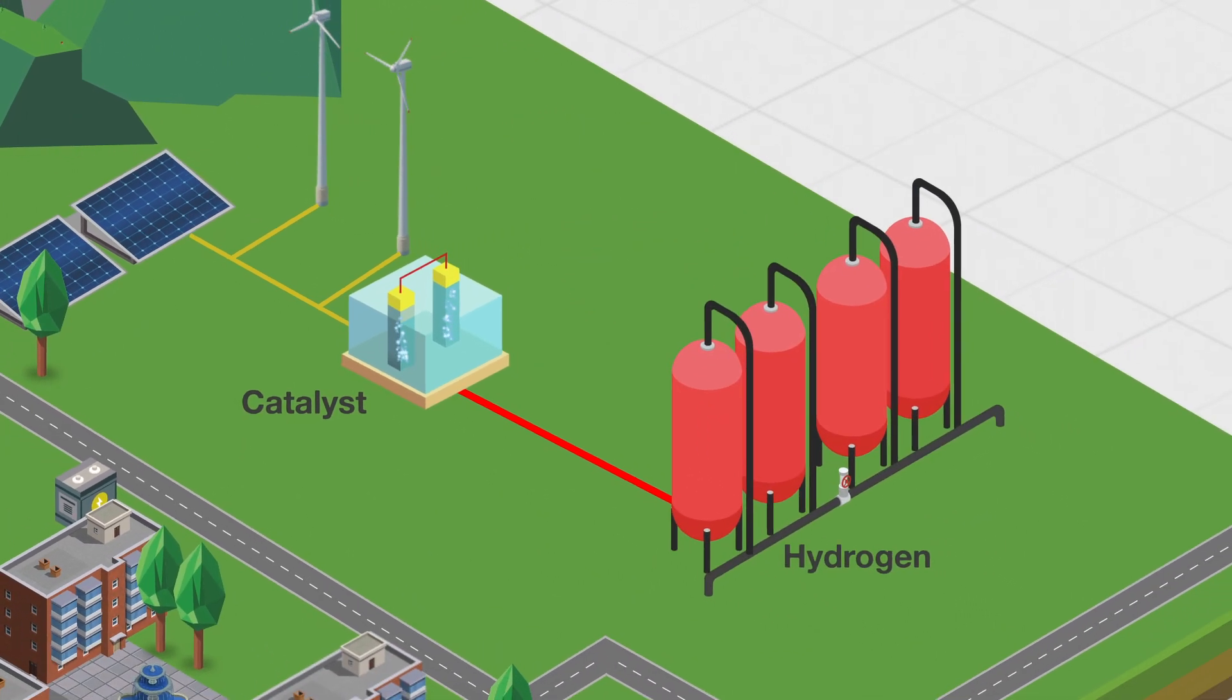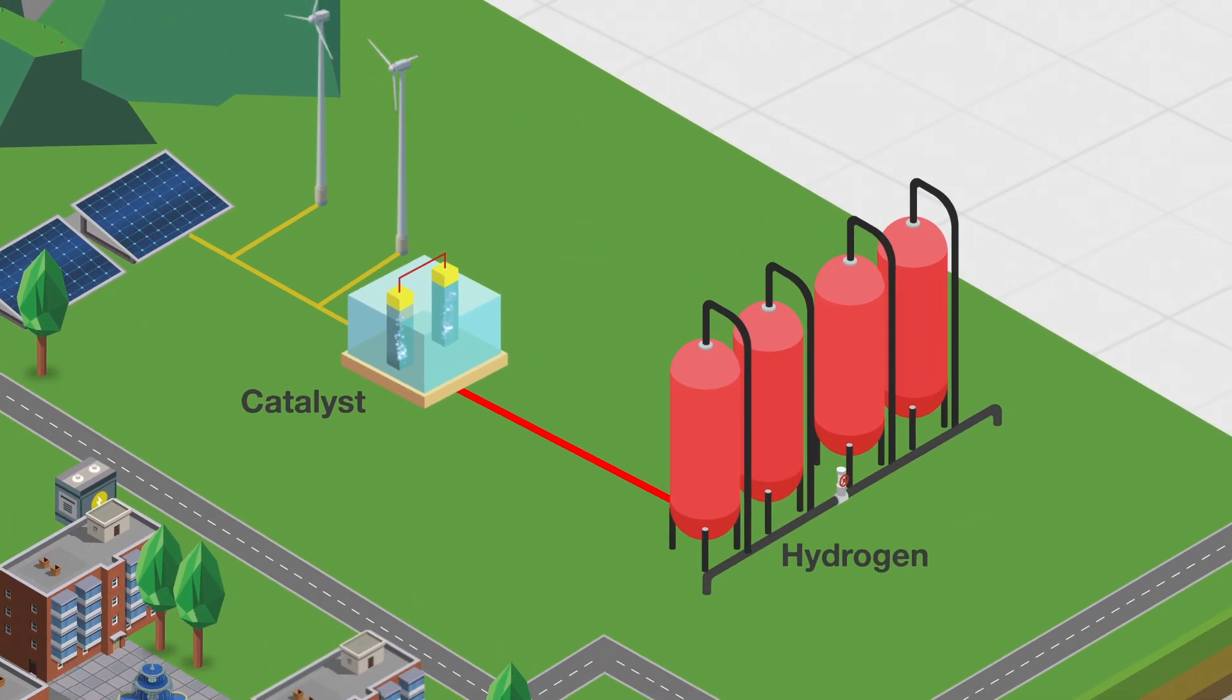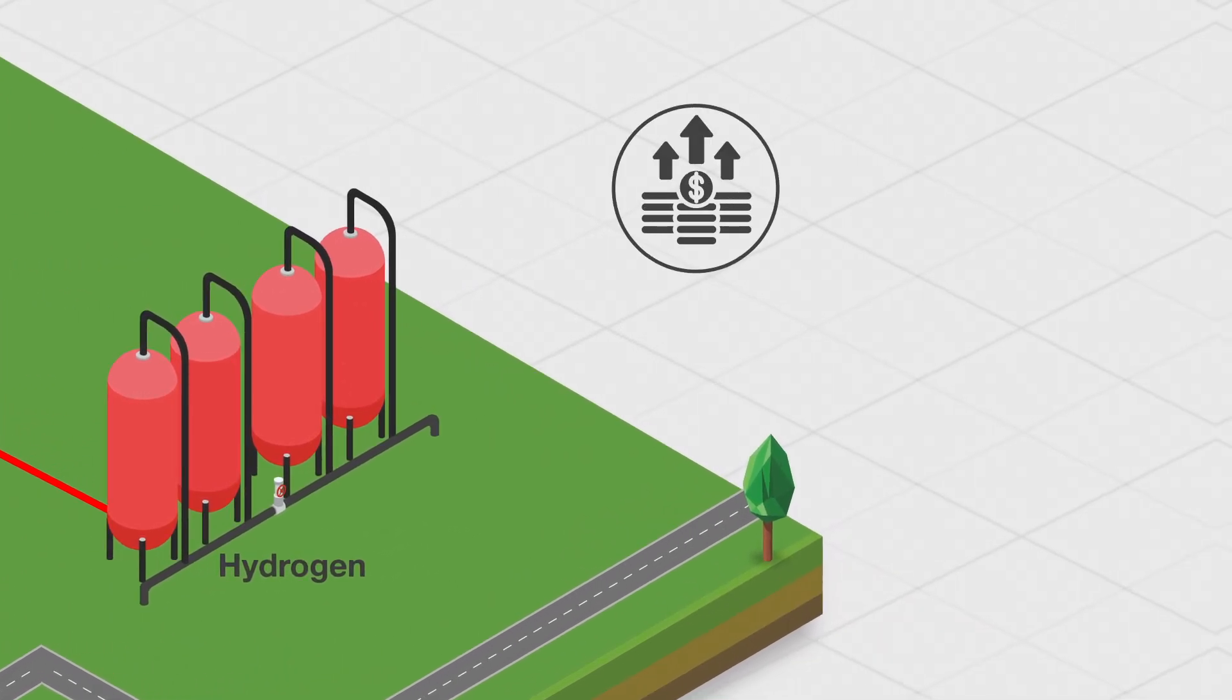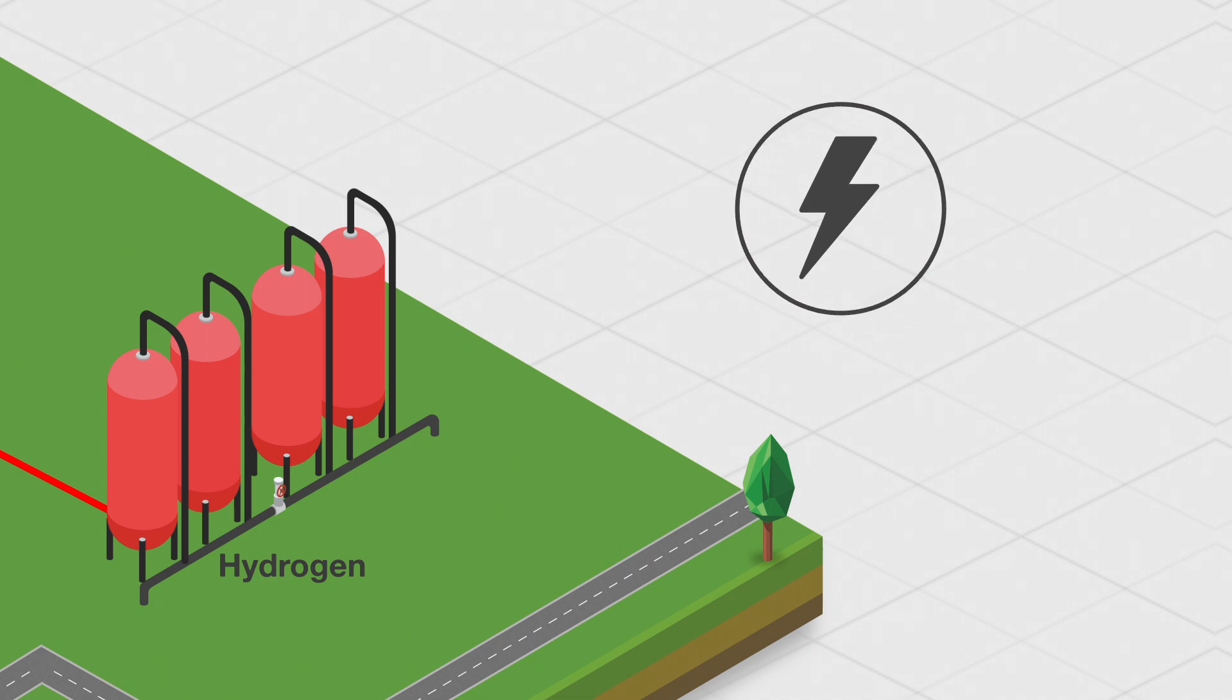These hydrogen molecules can be stored for a sufficiently long time and could provide energy. However, there is a problem. This storage is expensive and complicated because hydrogen molecules are volatile and escape easily. Also, a share of energy is lost in the conversion of hydrogen back into electricity.